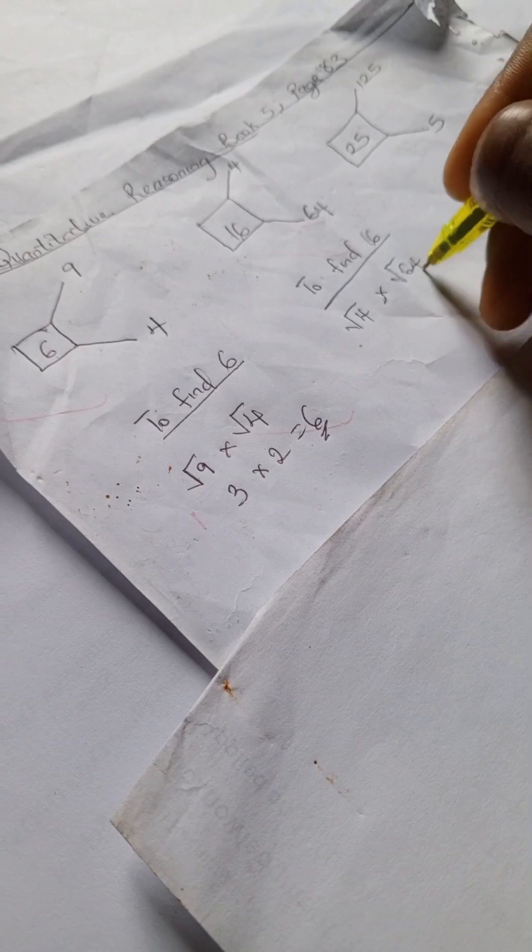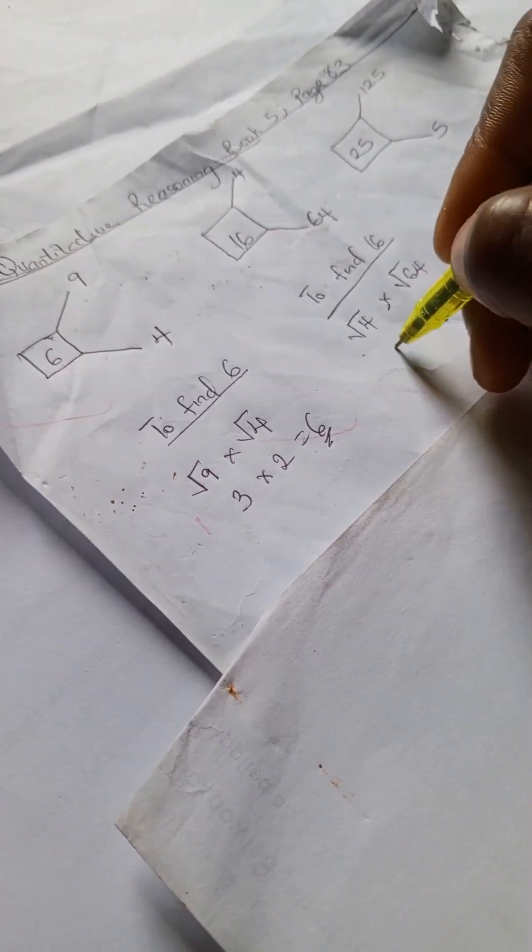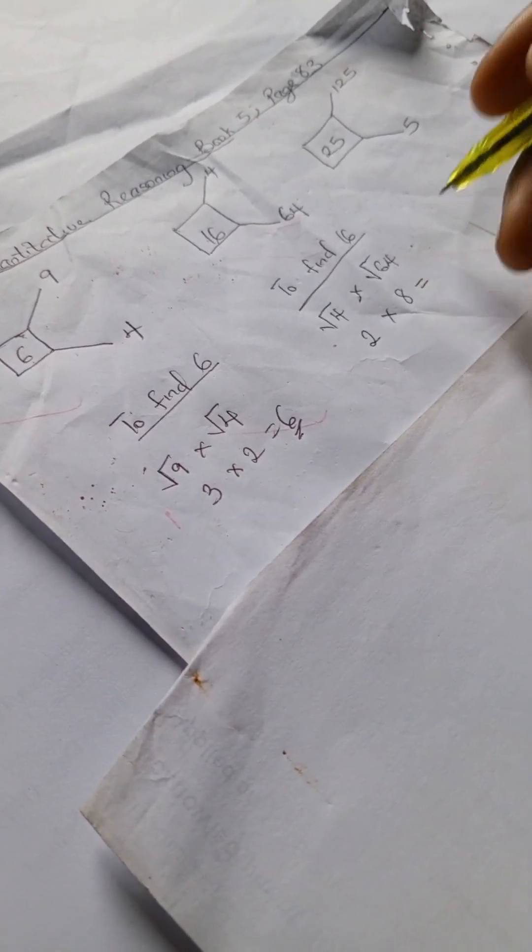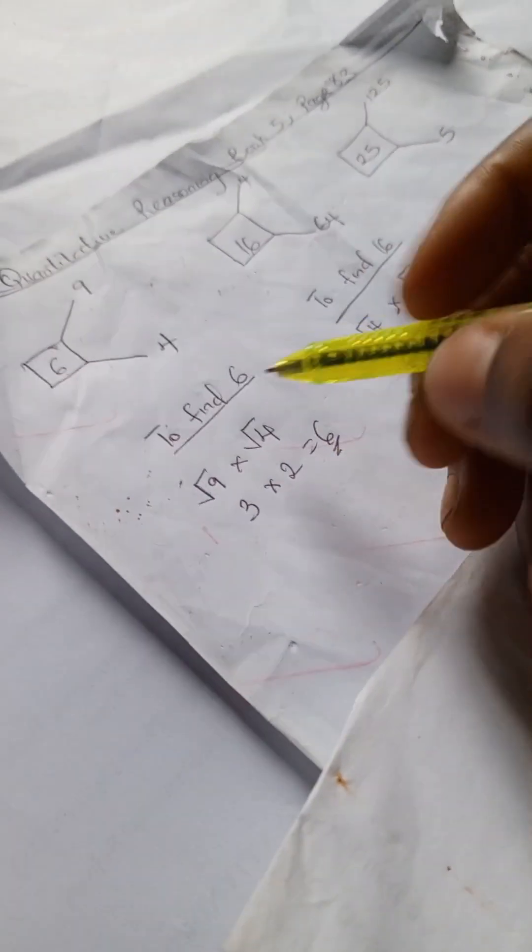To find 16, we're going to have the square root of 4 times the square root of 64. Square root of 4 is 2, times square root of 64 is 8, and 2 times 8 is 16.